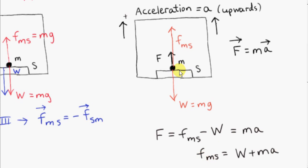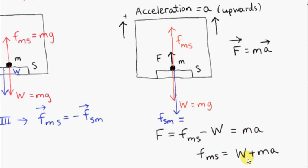Applying Newton's second law, the magnitude of the resultant force equals mass times magnitude of acceleration. So the force on the mass due to the scales is the weight W plus the mass M times acceleration A: F_MS = W + MA. Applying Newton's third law, the force on the scales due to M is equal and opposite, so its magnitude is also W + MA. That is the reading on the scales.